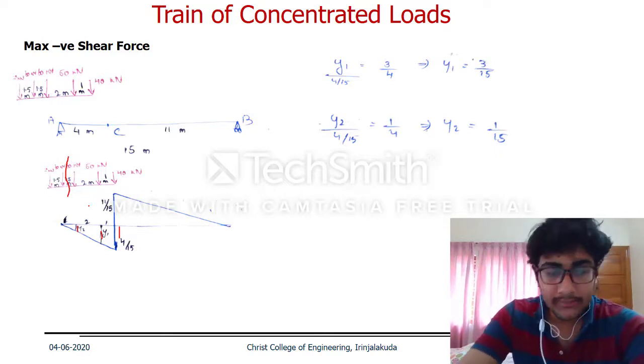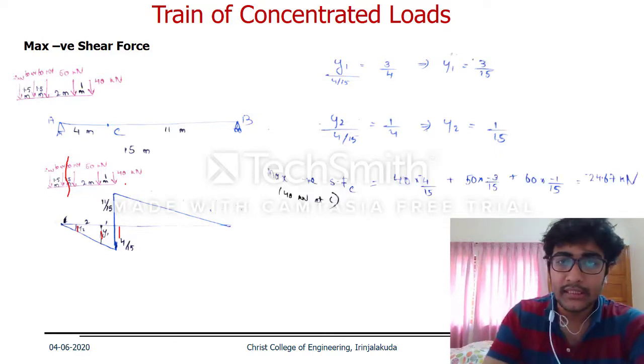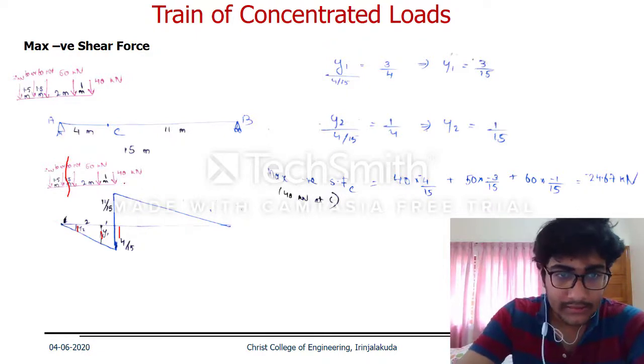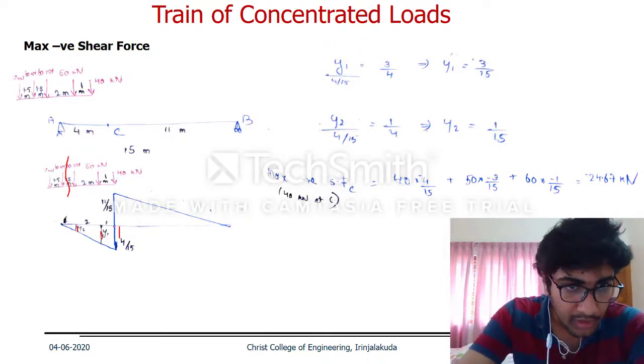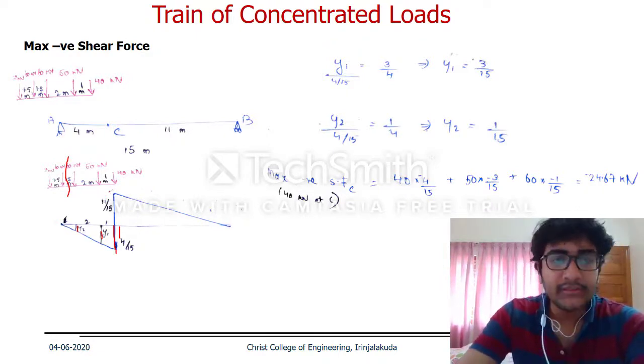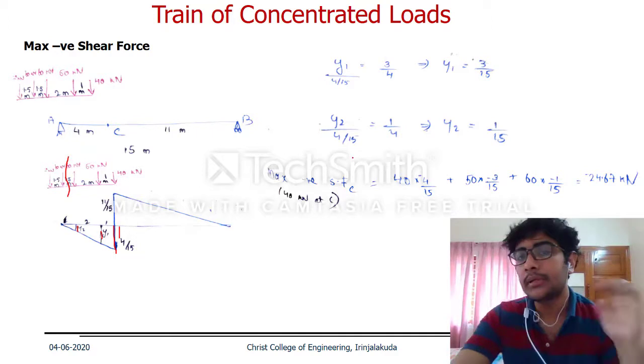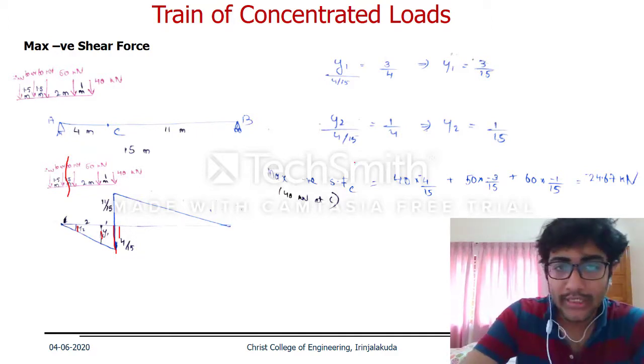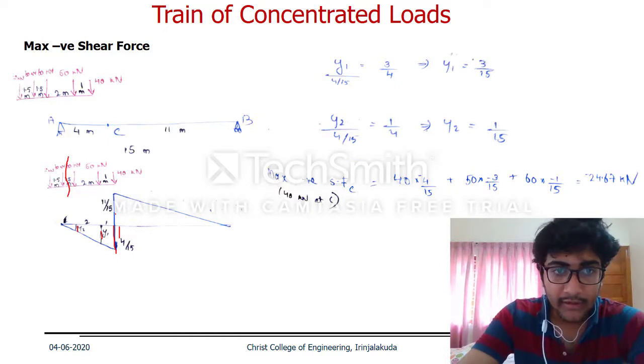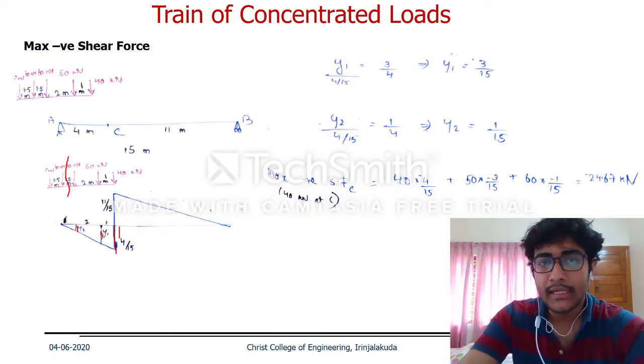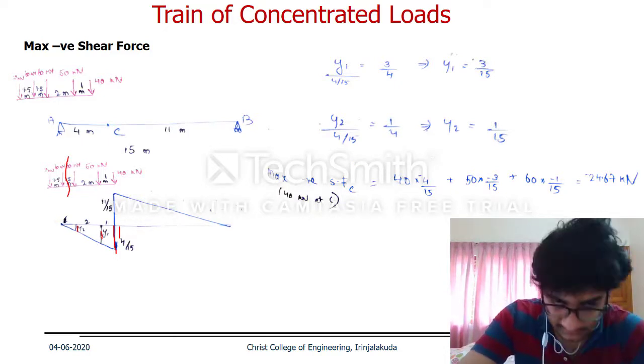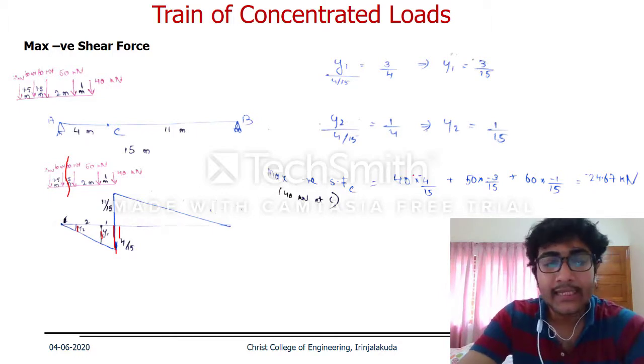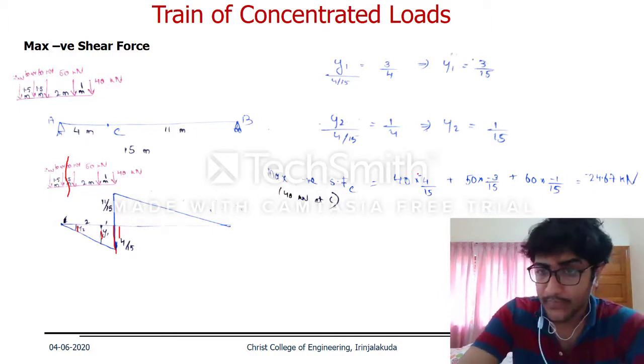Using the property of similar triangles, y1 contributes this ordinate with value 3/15, and y2 contributes 1/15. So we can calculate the maximum negative shear force at C when the 40 kN load is at C.